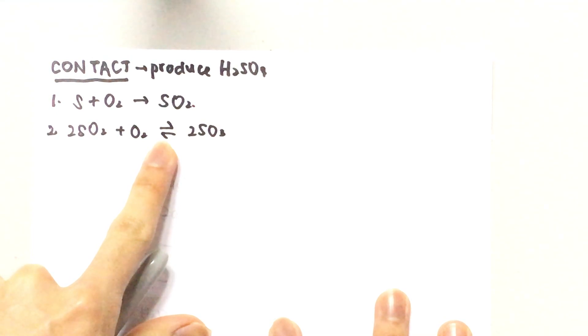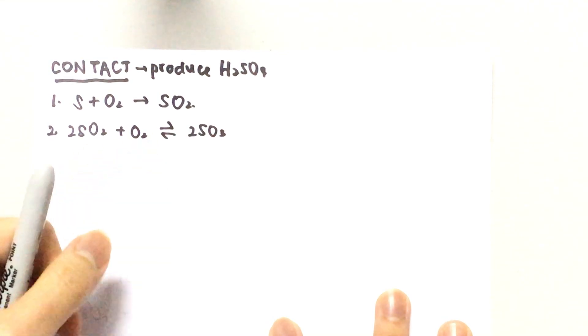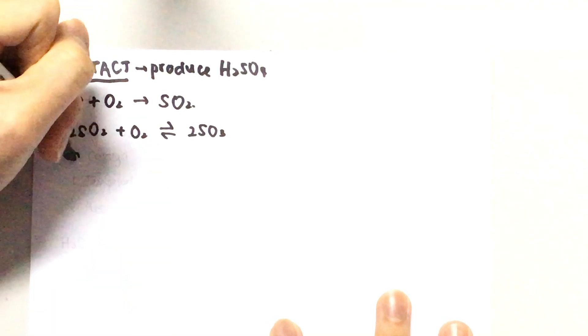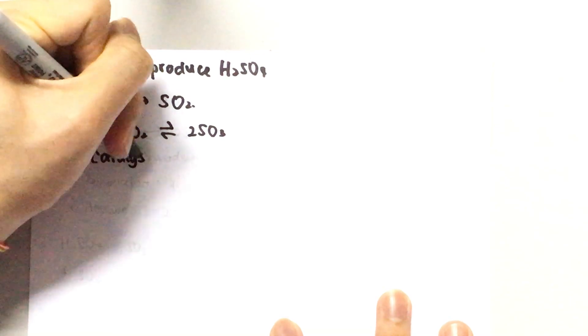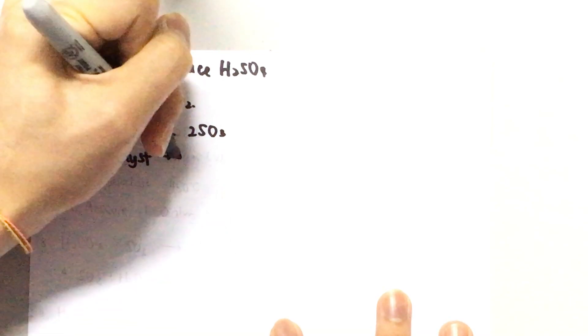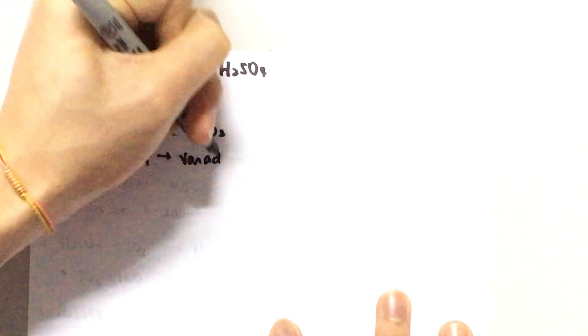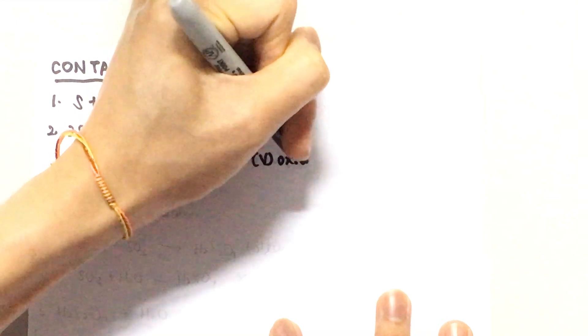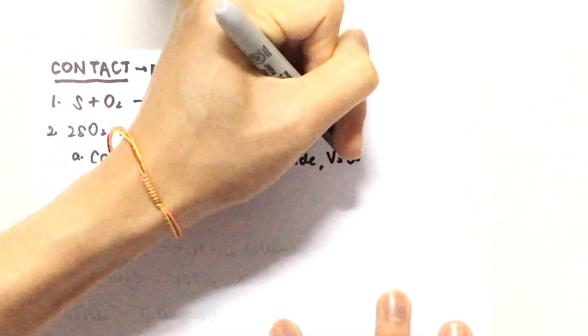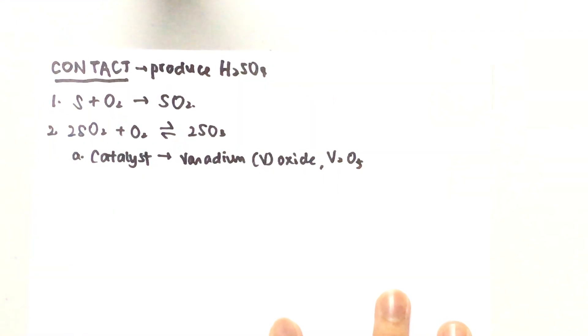There's a few conditions to this reaction. The first thing is the catalyst. We're going to use vanadium pentoxide, V2O5, as a catalyst, and the catalyst is just to make sure the equilibrium is reached faster.